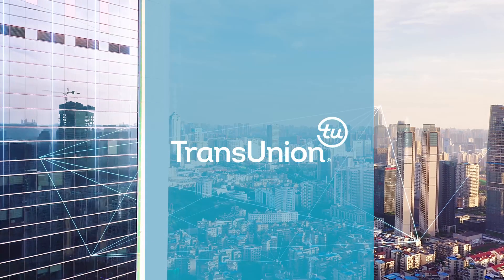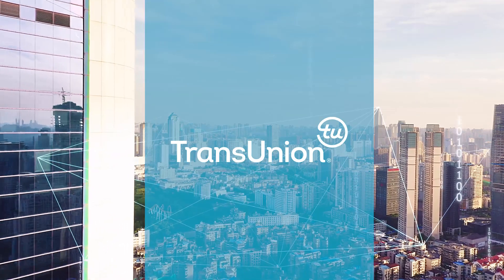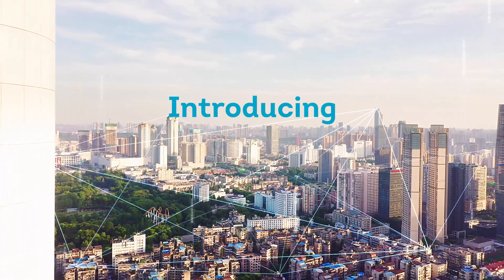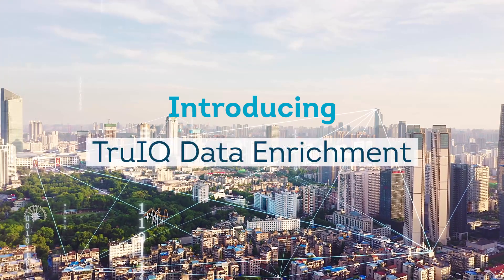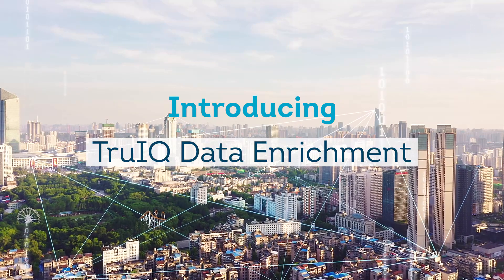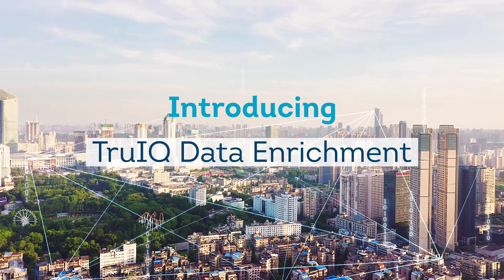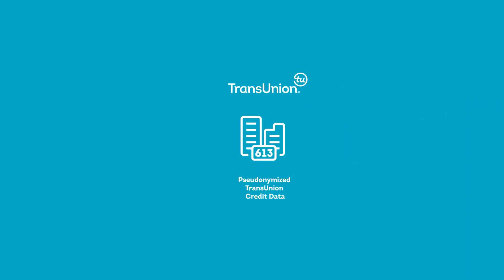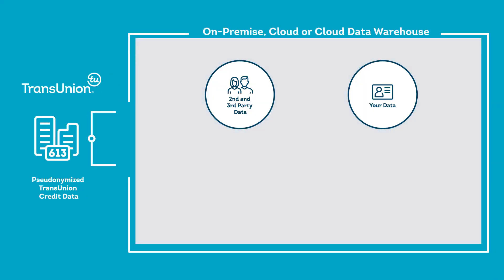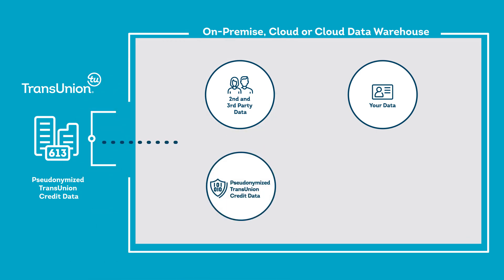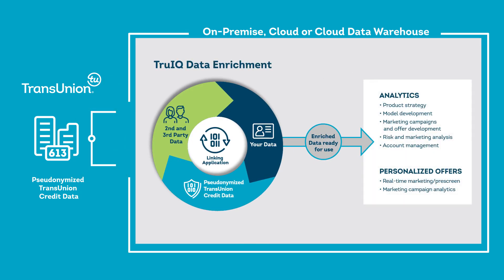TransUnion is revolutionizing how credit data is accessed. Introducing TrueIQ Data Enrichment. TrueIQ Data Enrichment provides on-demand, uncapped access to pseudonymized TransUnion credit data in your own environment. With its proprietary linking app, you can enrich it with your first- and third-party data without creating risk with sensitive data leaving your environment.